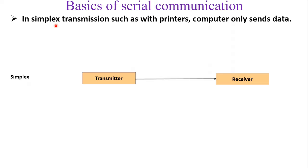Serial communication is further divided into three types: simplex, half-duplex, and full-duplex. In simplex communication, the transmitter can only send data to the receiver — for example, a computer sending data to a printer. The printer cannot send data back to the computer. Similarly, a mouse can only transmit data to the CPU.